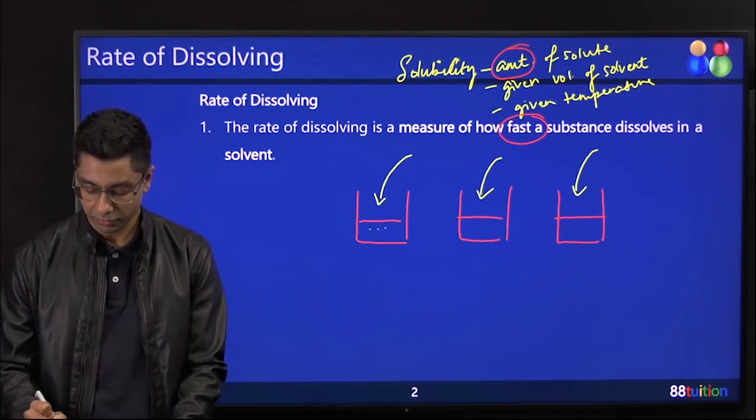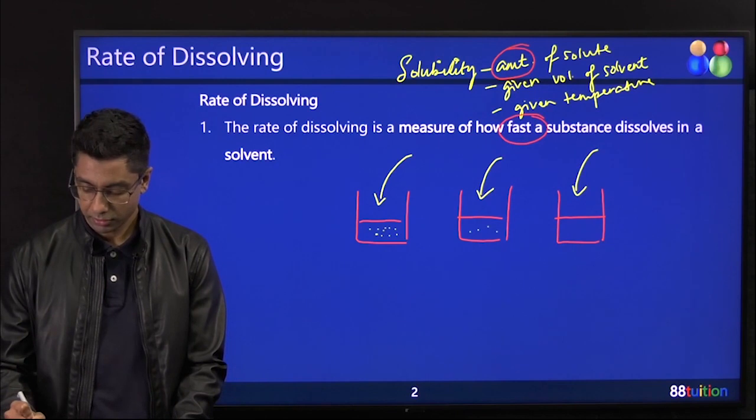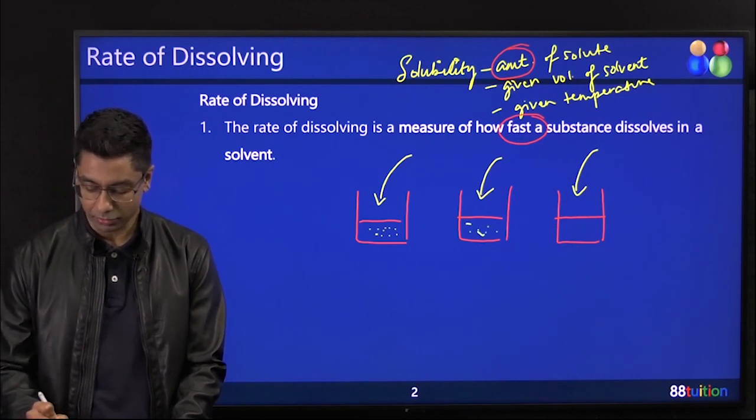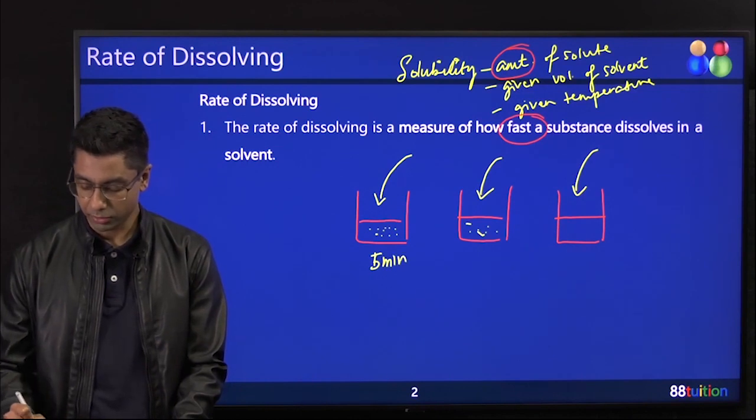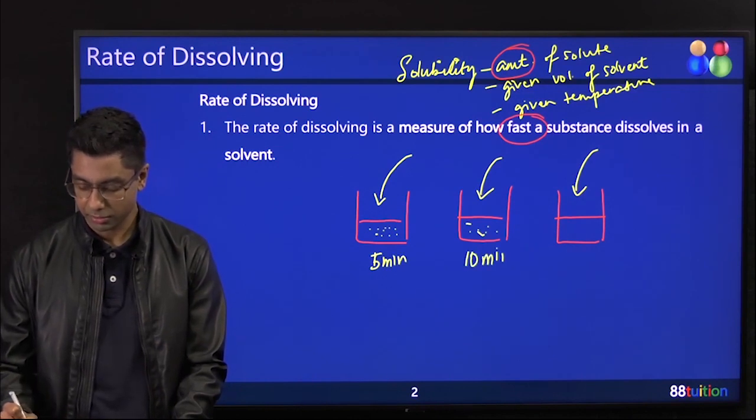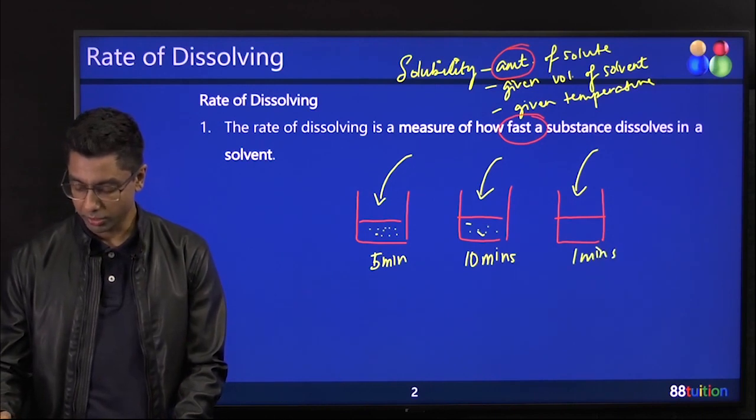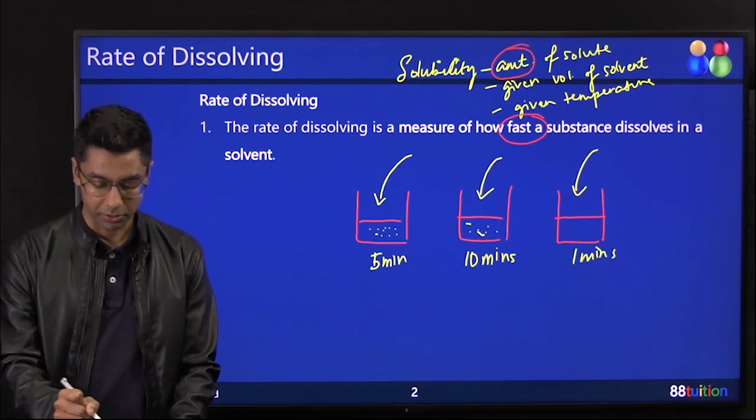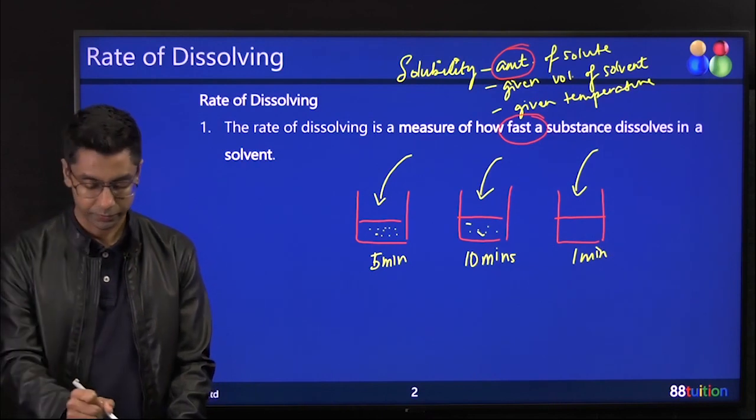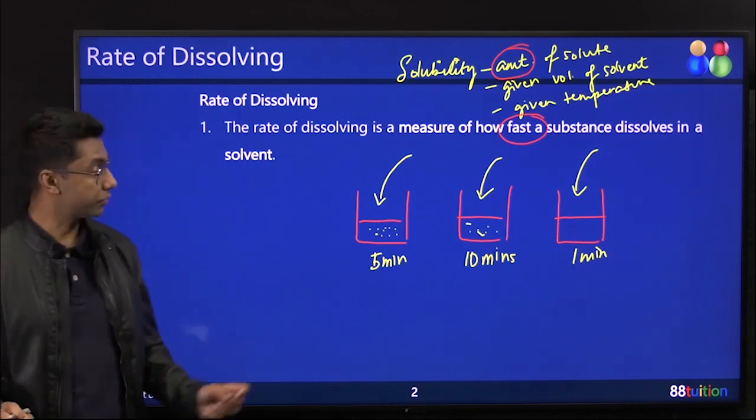So you can have solvents and you can have solutes that dissolve, but this dissolves in five minutes, this dissolves in ten minutes, and this dissolves in one minute. So what did I do to make it dissolve in one minute? It dissolves so fast I can't even see it anymore.